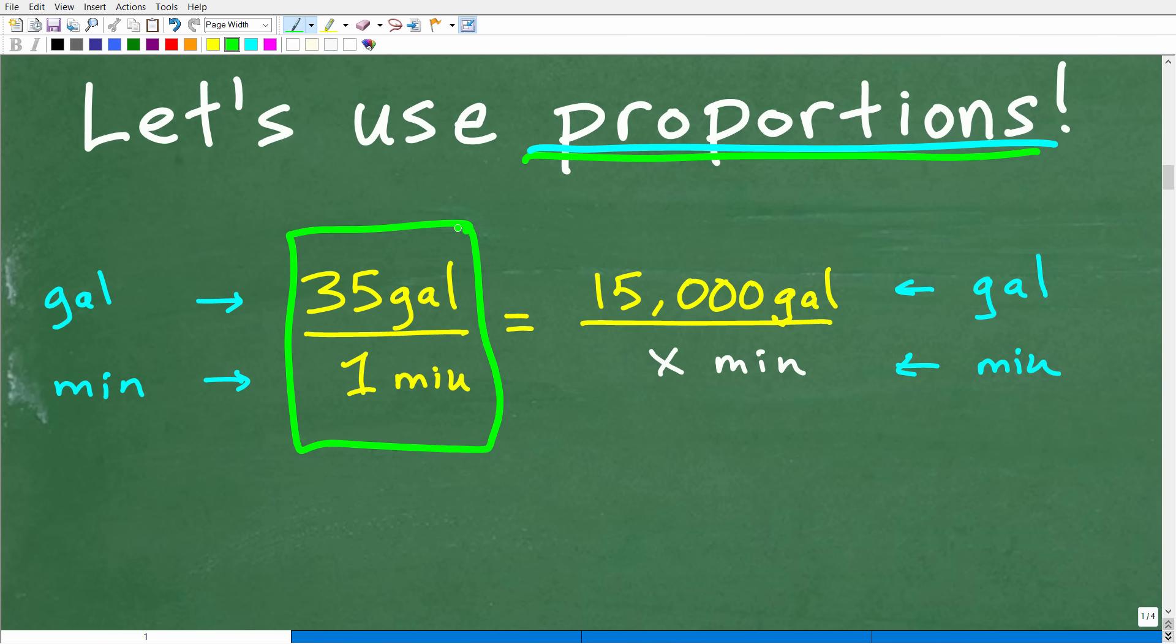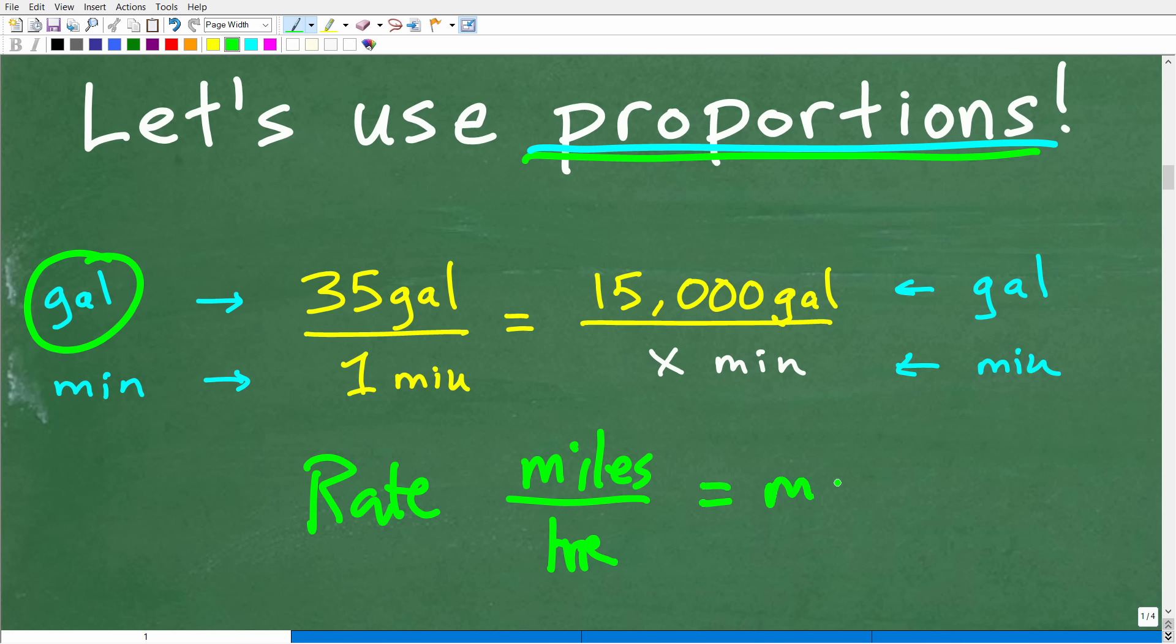Okay. So here again is our pumps information. Now notice the numerator, okay, is gallons. Okay. That's the unit of measure. And by the way, by the way, a rate by definition is a fraction where we're comparing two completely different units of measure. So let's take, for example, miles per hour. Okay. Miles per hour. So that is, of course, miles per hour written like so. But miles is measuring what? That's distance. And the hours is measuring what? Time. So we're comparing distance with time, two completely separate units of measure. So this is what a rate is.